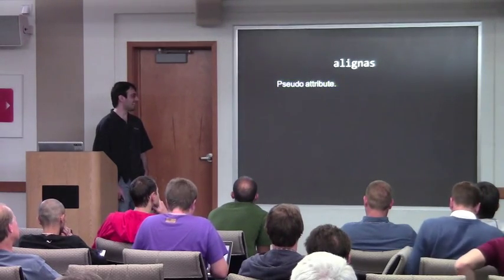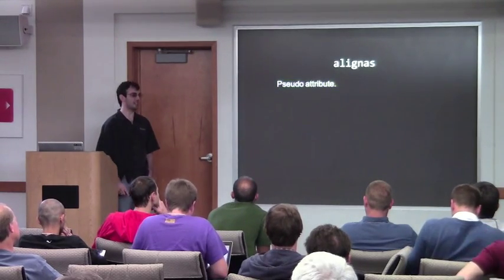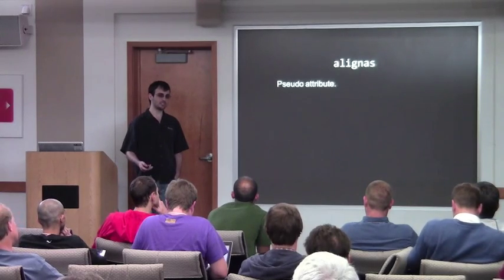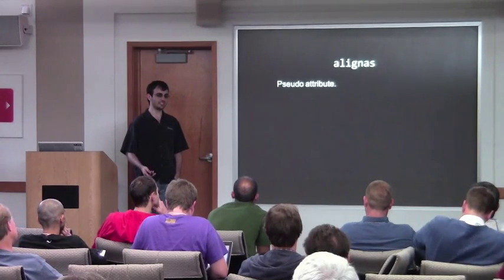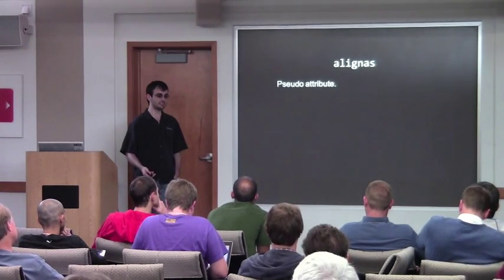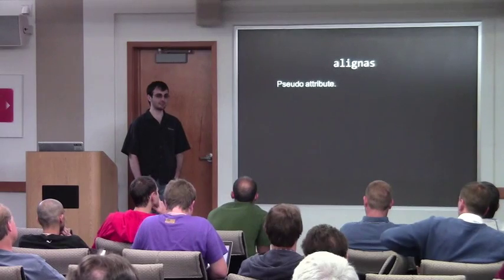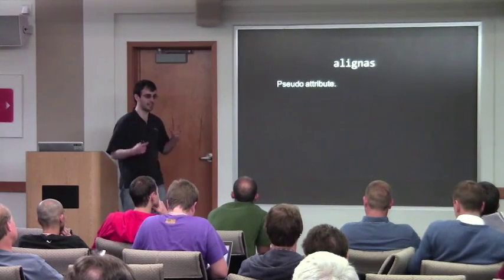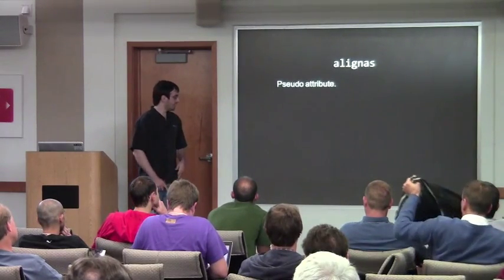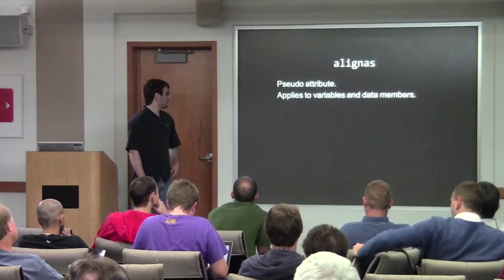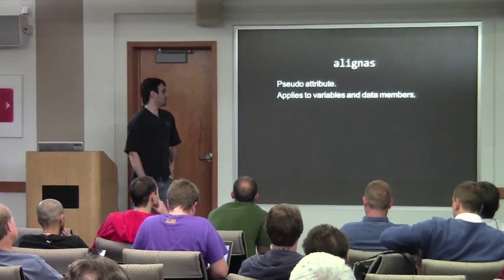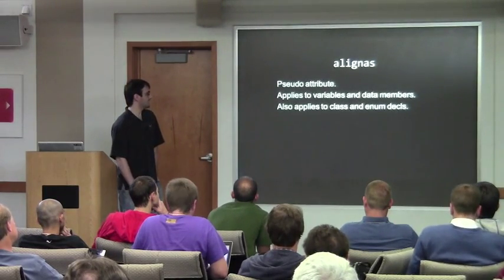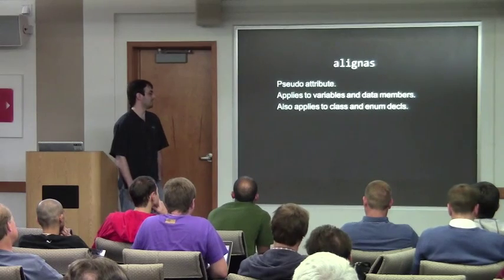`alignas` is a pseudo-attribute. It's defined with all the attributes in the standard, but it does not have the same syntax — it doesn't have the brackets around it. It applies to variables and data members, and also to classes and enum declarations.